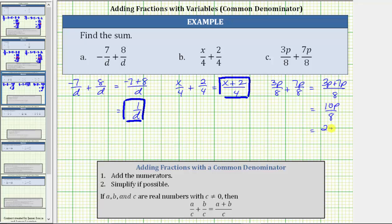This gives us two times five p over two times four. In this form, we can see the common factor of two between the numerator and denominator. Two divided by two simplifies to one. The simplified sum is five p over four.